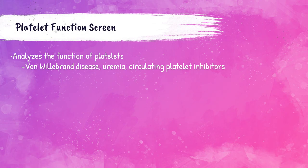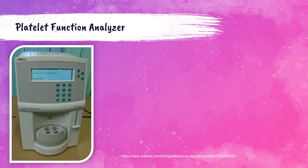The platelet function screen analyzes the ability of platelets to form clots. Abnormalities may indicate von Willebrand disease, uremia, or platelet inhibitors. This is run on a benchtop automated platelet function analyzer that assesses platelet function under shear stress. It uses cartridges containing collagen and ADP, and collagen and epinephrine. The lab technician pipettes whole blood into the cartridges and results are produced within several minutes.